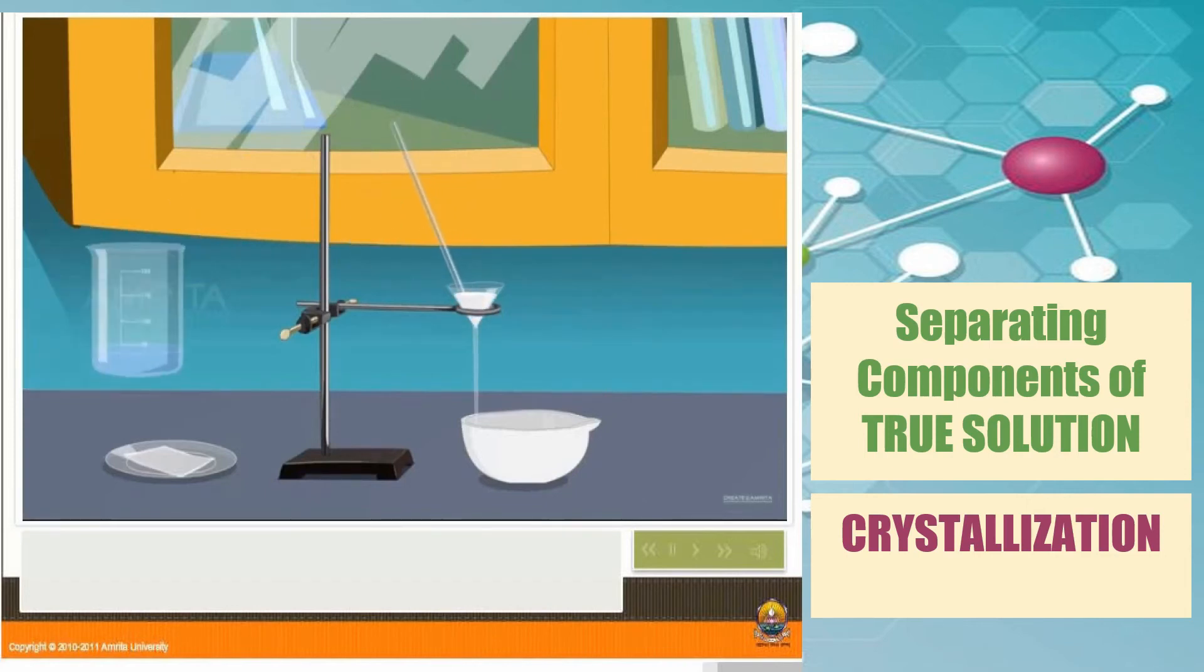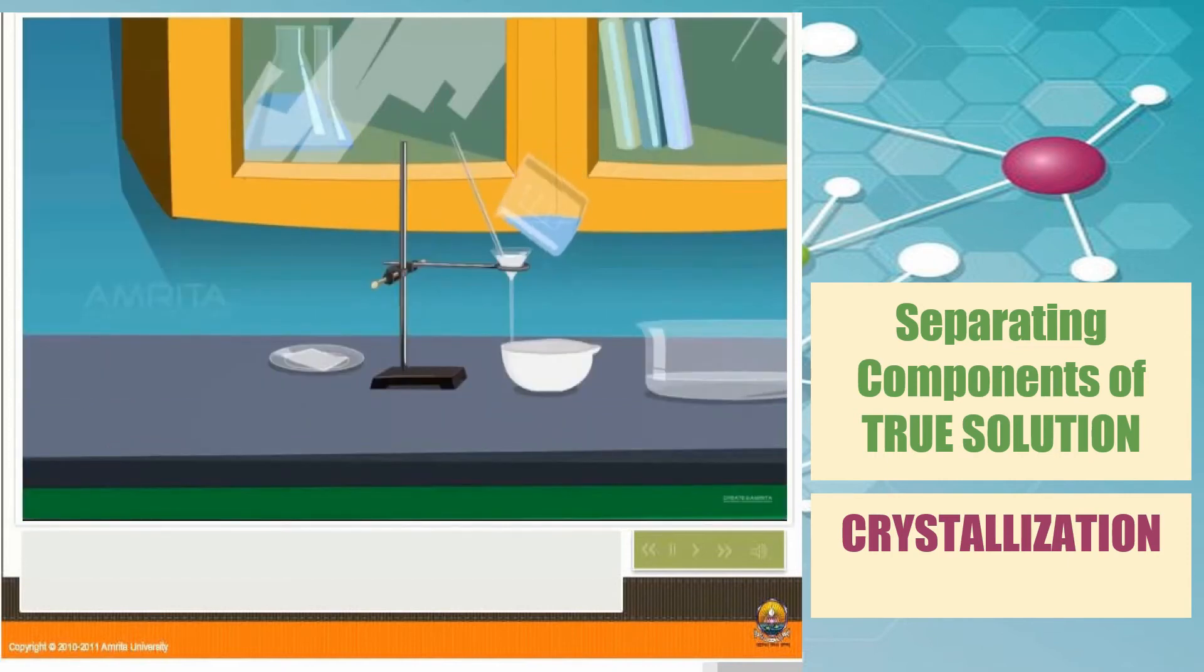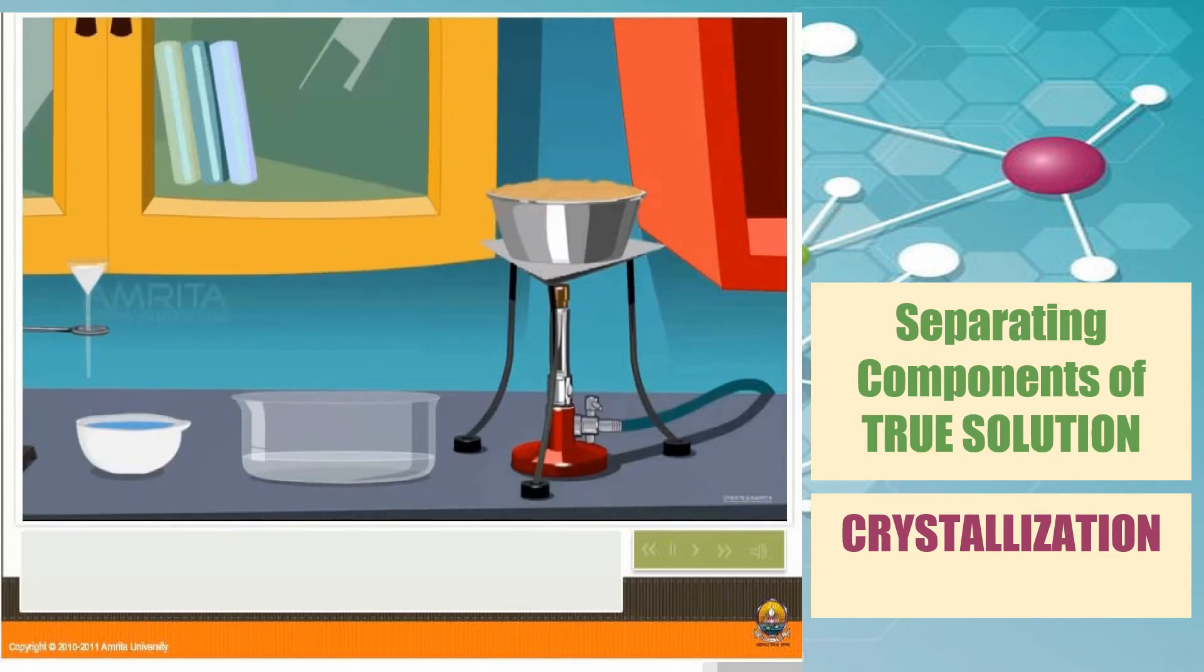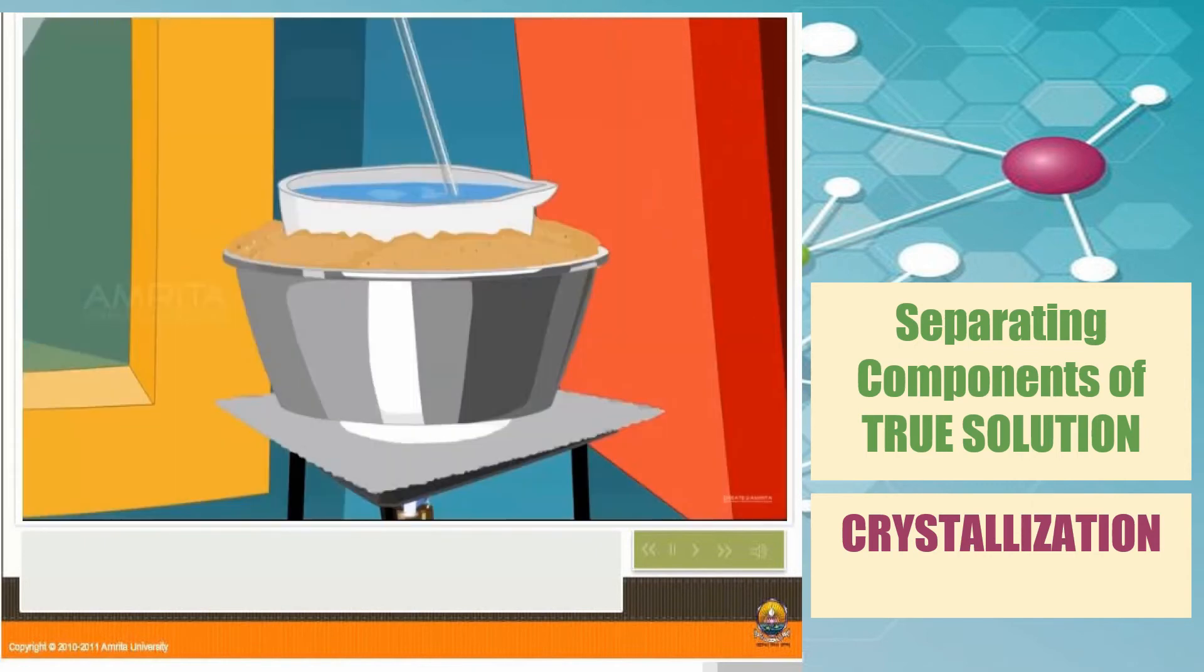First, we are going to filter the mixture so that the insoluble components of the mixture will remain as residue in the filter paper and we will have a clear filtrate. Keep the filtrate on the dish using a sand bath. Continue stirring so that the sediments will not form at the bottom of the dish.